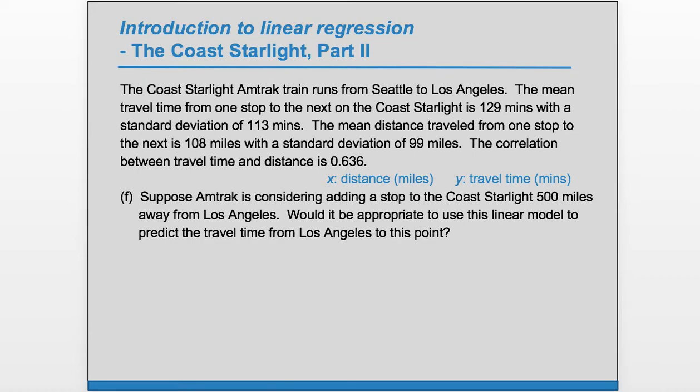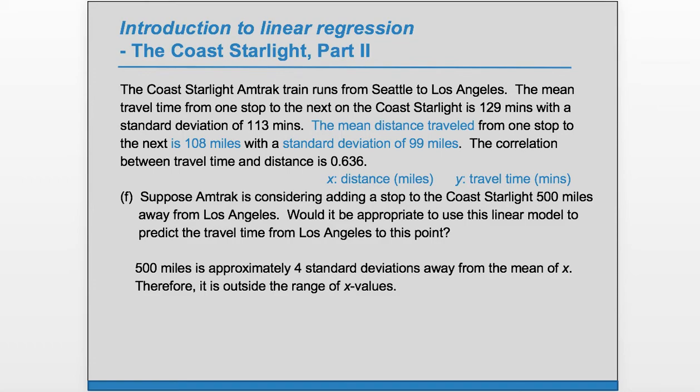Part F: Suppose Amtrak is considering adding a stop to the Coast Starlight 500 miles away from Los Angeles. Would it be appropriate to use this linear model to predict the travel time from Los Angeles to this point? Well, let's think about 500. The mean for the distance traveled is 108, and the standard deviation is 99. So this is approximately four standard deviations away from the mean of x.